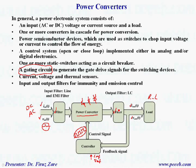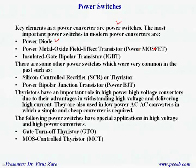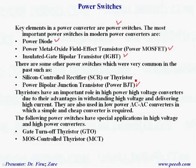In a power converter, the key elements are power switches. The most important power switches in modern power converters are power diodes, power MOSFETs, and IGBT. There are some other power switches which were very common in the past, such as power BJT. This type of switch has significant switching loss and some constraint on gate drive, so it is not very common.